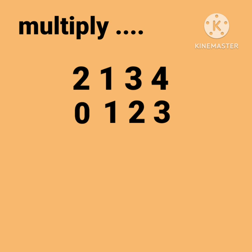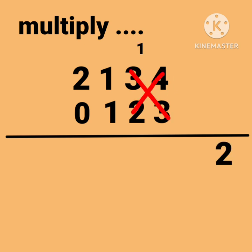Cross multiply 4 × 3, we get 12. Write 12's 2, carry 1. Cross multiply 4 × 2, 3 × 3, add carry 1. Total is 18, write 8, carry 1. Cross multiply 4 × 1, 3 × 1,